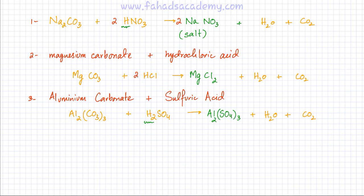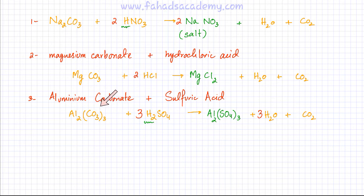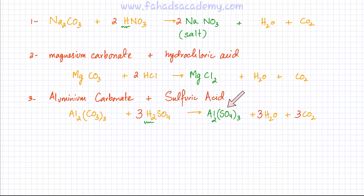Now balance the equation. Aluminium is already balanced. For sulfate, SO₄, there are three sulfate ions, so there should be three H₂SO₄ molecules, making six hydrogens, meaning three water molecules. There are three carbonate ions, each with one carbon, so there should be three CO₂ molecules. Oxygen atoms are also balanced — nine on the left in carbonate, twelve in sulfate giving twelve, and six plus three on the product side, confirming balance. This is the balanced equation: aluminium carbonate reacting with sulfuric acid producing aluminium sulfate, water, and carbon dioxide.